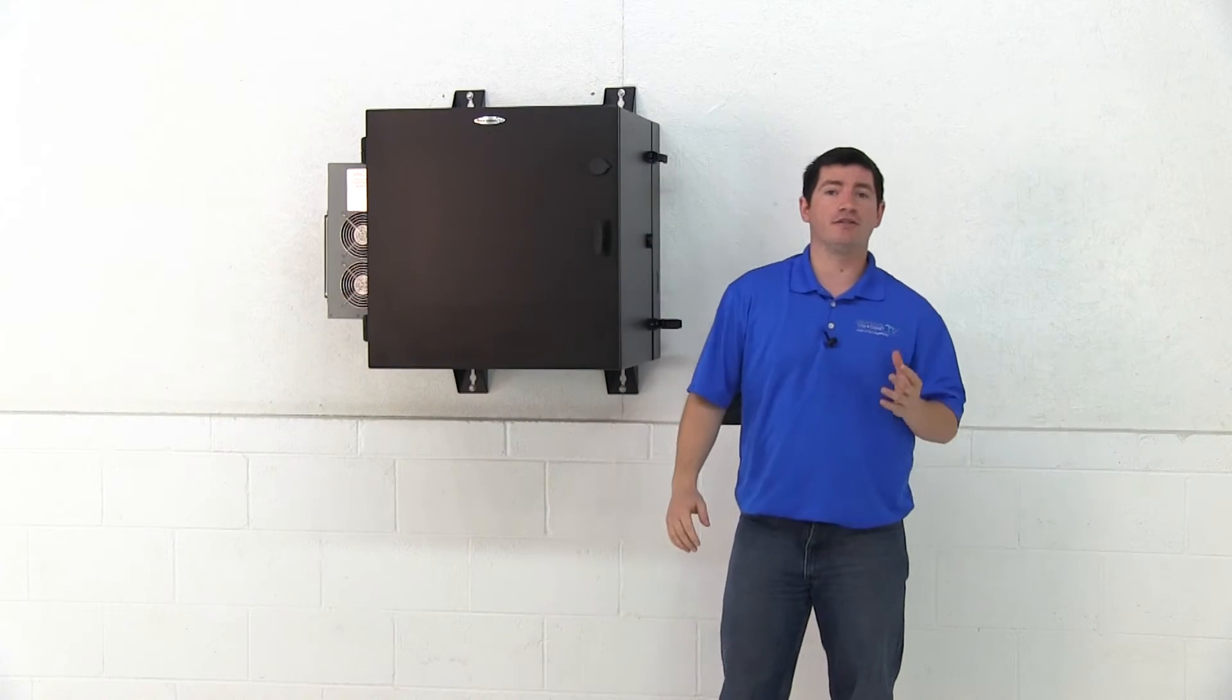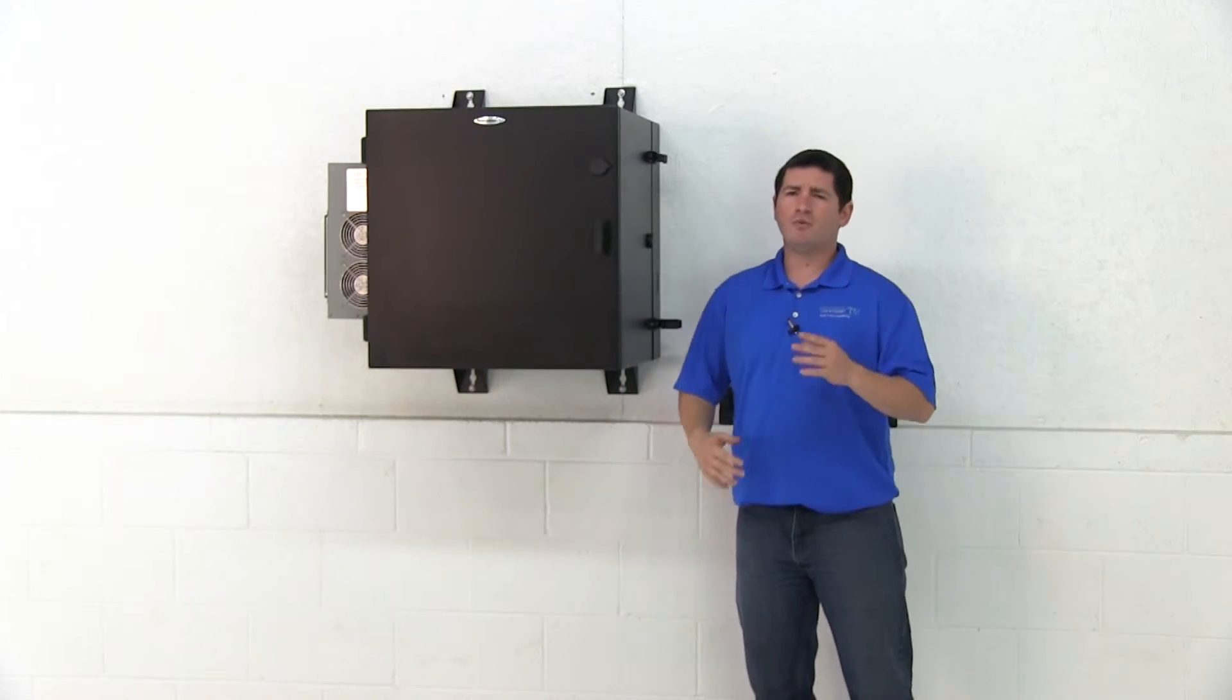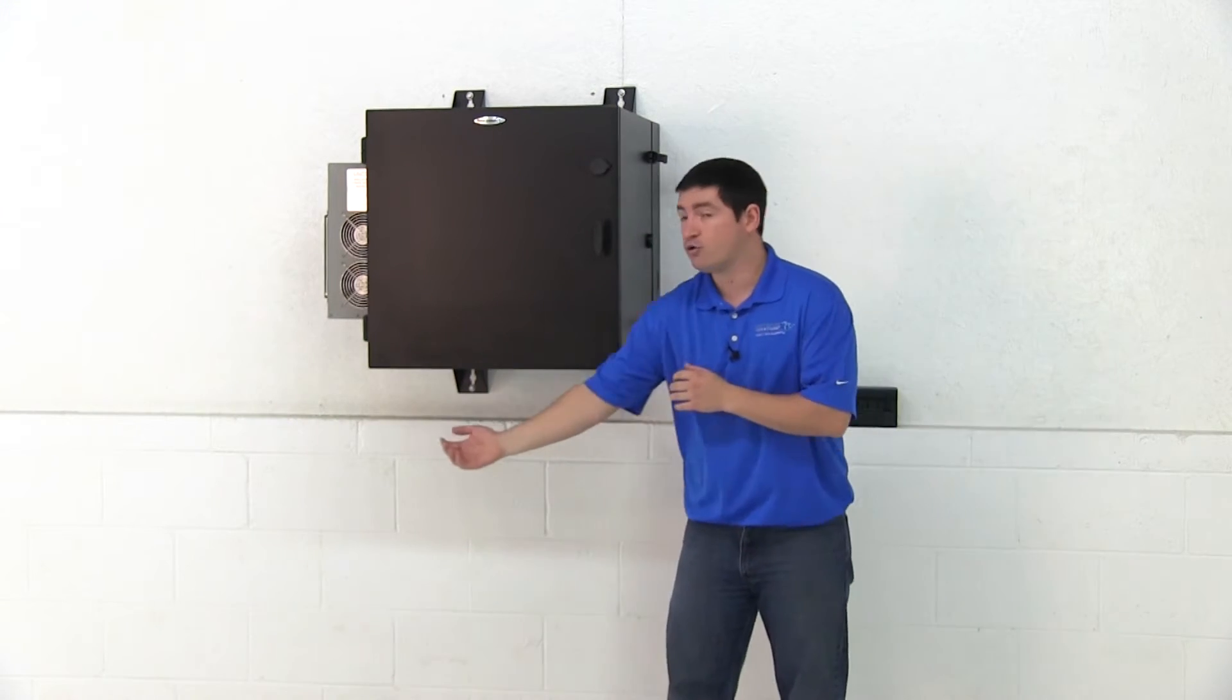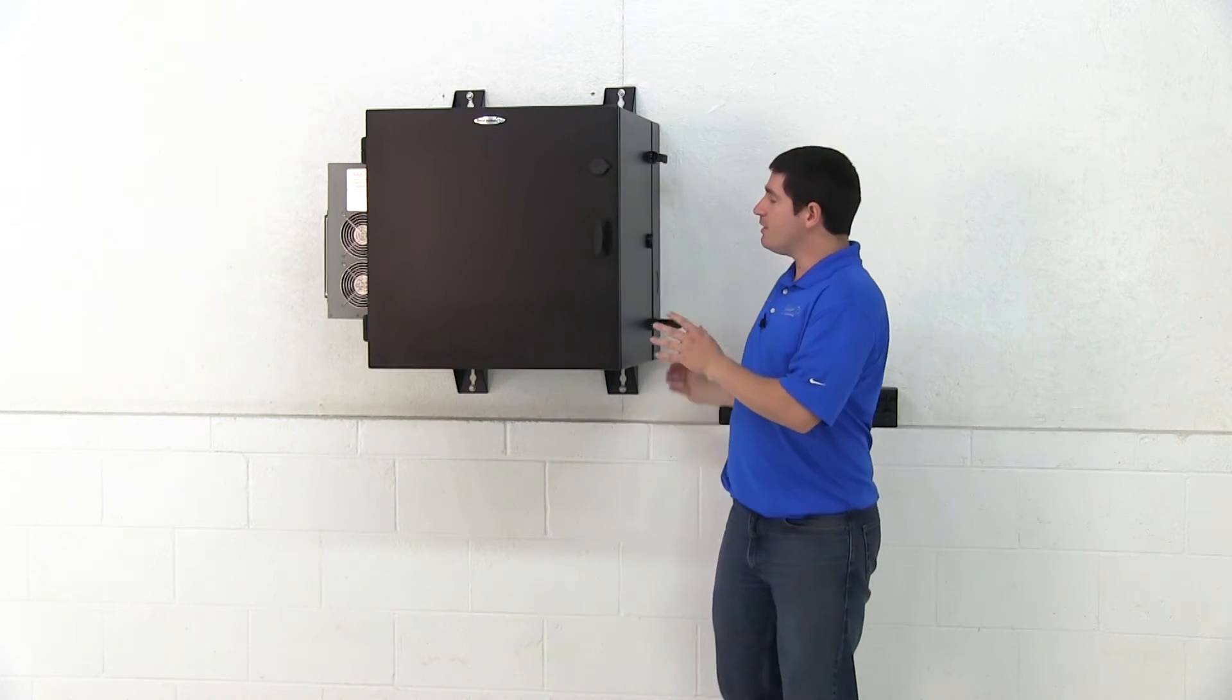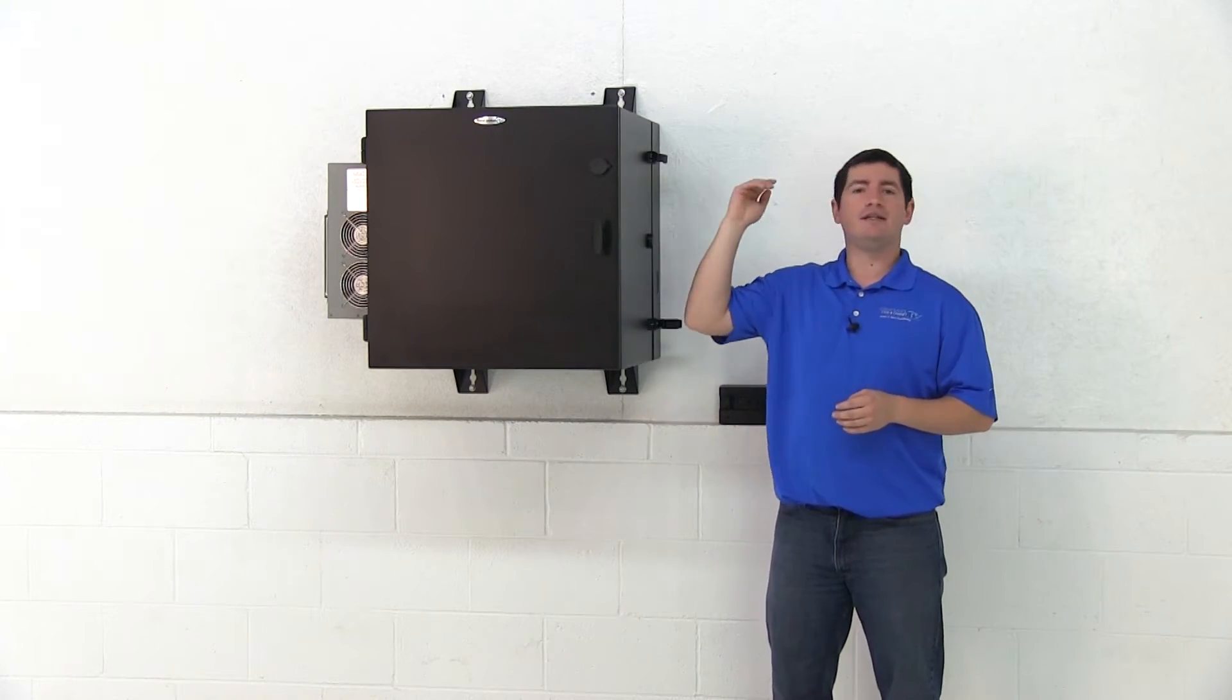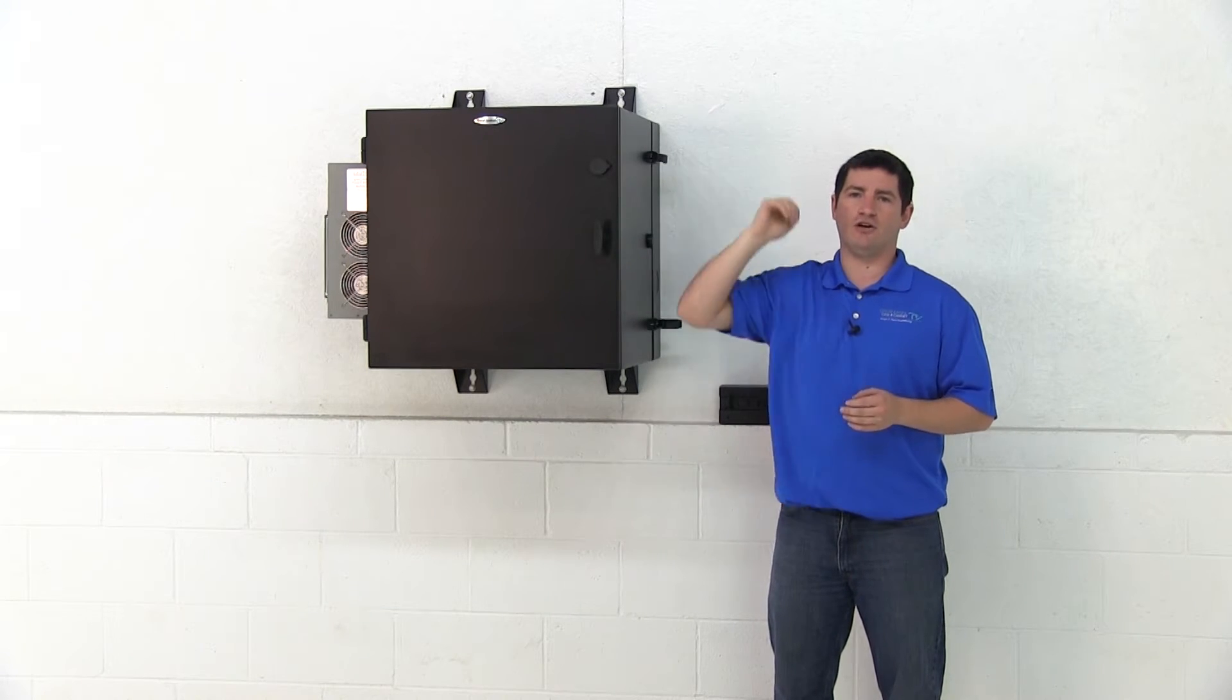Features of both series of wall mounts are similar but I will point out a few differences. All NEMA 12K wall mounts are 24 inches wide, 24 inches deep and available in three heights 12RMU, 19RMU and 26RMU.